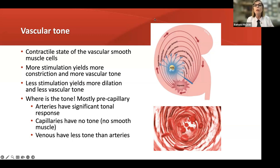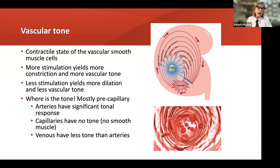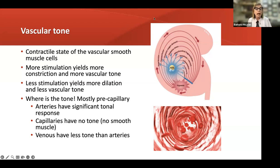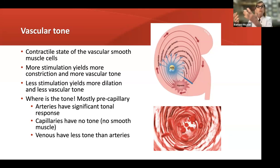In the generalized world of understanding, more sympathetic stimulation and more catecholamines should always yield a higher level of vascular tone and vasoconstriction, and less stimulation — either blocking sympathetic stem or primary parasympathetic stimulation — will yield more dilation and less vascular tone. That's the presupposition underlying our understanding. When you're using norepinephrine, epinephrine, or dopamine, you are expecting that the vessel will constrict, and your measurement of that is the blood pressure.